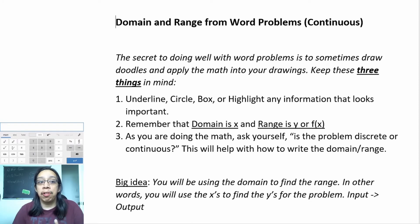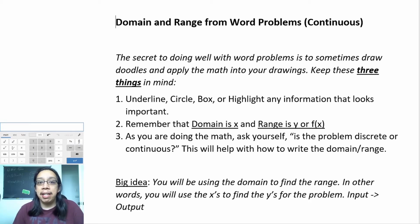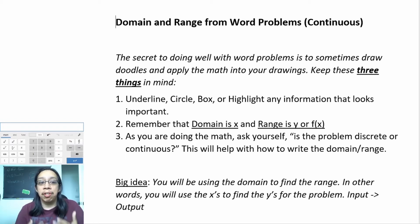There are a couple of secrets that will help you do well with these types of word problems. Since we're talking about domain and range, these tips will be specifically for these types. One of the first things you should do — and this applies to any type of word problem — is underline, circle, box, or highlight any information that looks important or is important to the problem. Typically you'd do this after you give the problem a first read, then go back and hunt down the information.